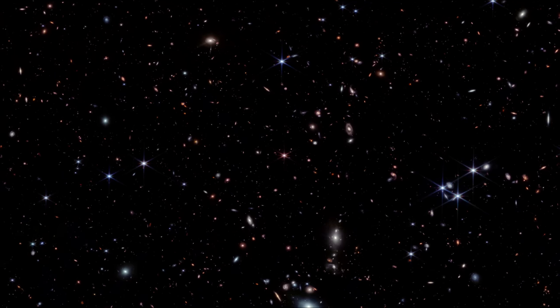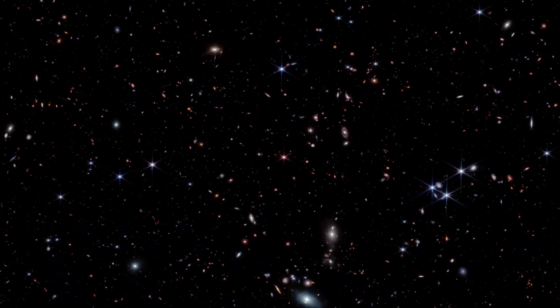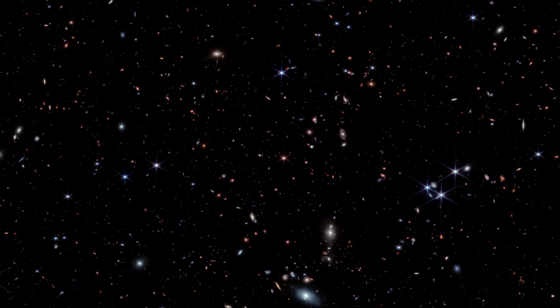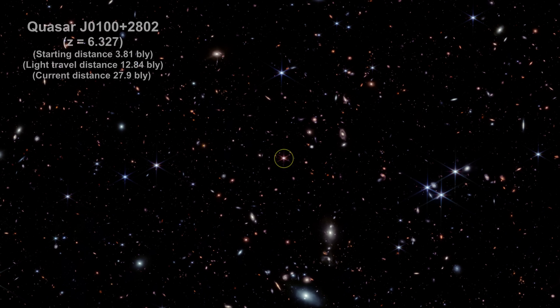Here's an image taken by Webb in 2023. There are more than 20,000 galaxies in this field. The hyperluminous quasar J0100 plus 2802 is at the center. It is one of the most luminous quasars known. Its supermassive black hole is 10 billion times more massive than our sun. Its redshift is 6.327. That gives us the distance the light traveled to reach us at 12.8 billion light years.